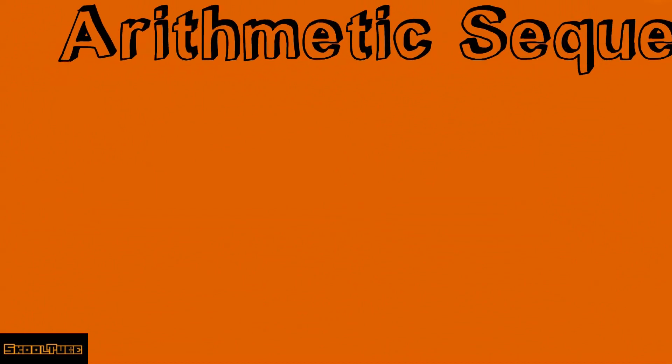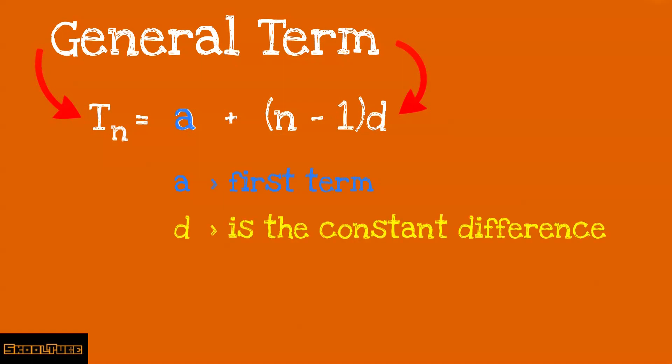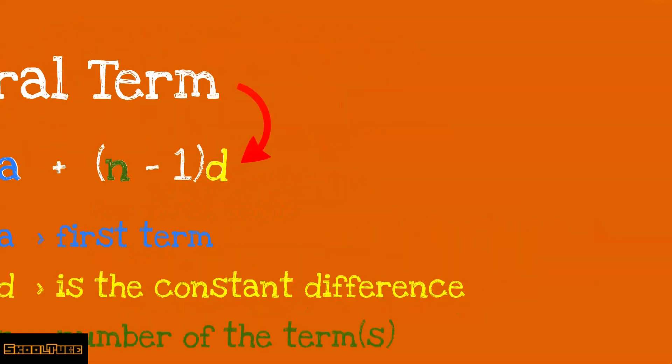Arithmetic sequences are given by a general term. The formula for this general term is Tn equals a plus (n minus 1) multiplied by d. In this formula, a is the first term, d is the constant difference, and n is the number of terms in the sequence. Let's look at an example.